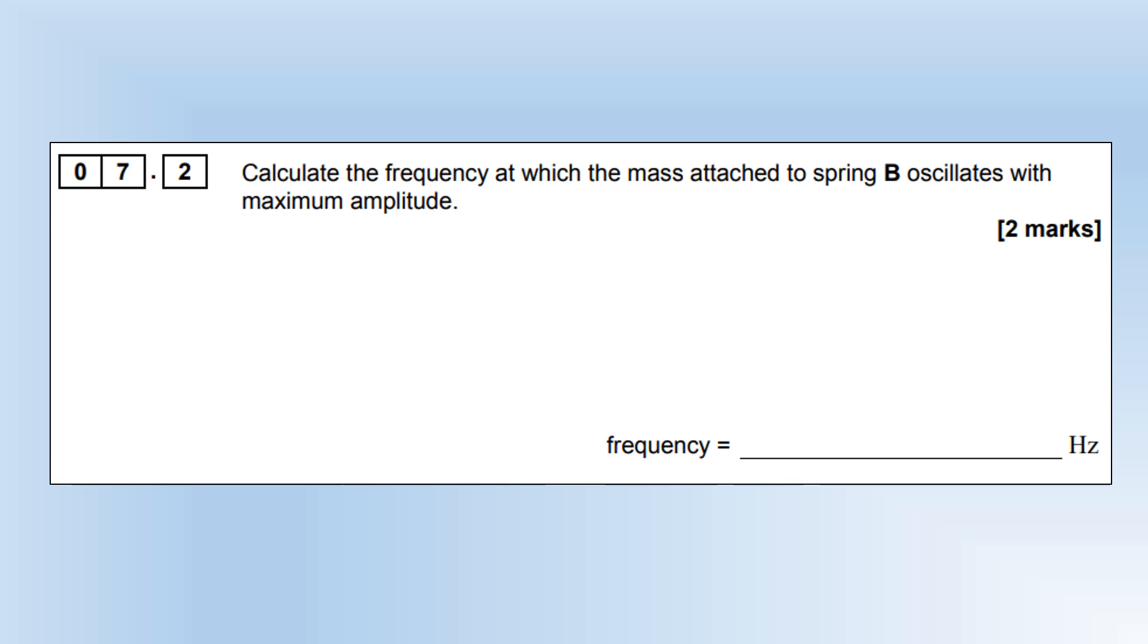Calculate the frequency at which the mass attached to spring B oscillates with maximum amplitude. We want the natural frequency of B. I'm just going to use the fact that natural frequency and √k are directly proportional. K is 3 times bigger, so the frequency should be multiplied by √3, giving us 3.5 Hz.